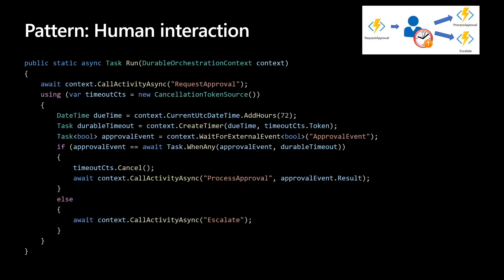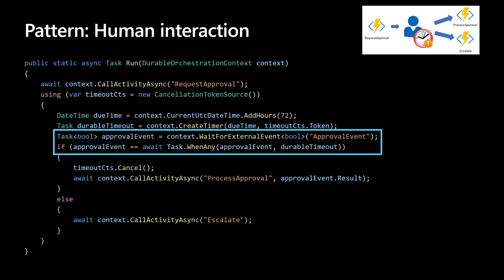Many automated processes involve some kind of human interaction, and involving humans in an automated process is tricky because people aren't as highly available — they kind of need to sleep — or as responsive as cloud services. So an automated process might allow for this by using timeouts and compensation logic. What we're seeing here is that we're going to create an external event — the approval event — and wait for it. But we're also going to have a timeout and wait until either one finishes first, then figure out if that event was the approval event or the timeout event, and go from there following the workflow.